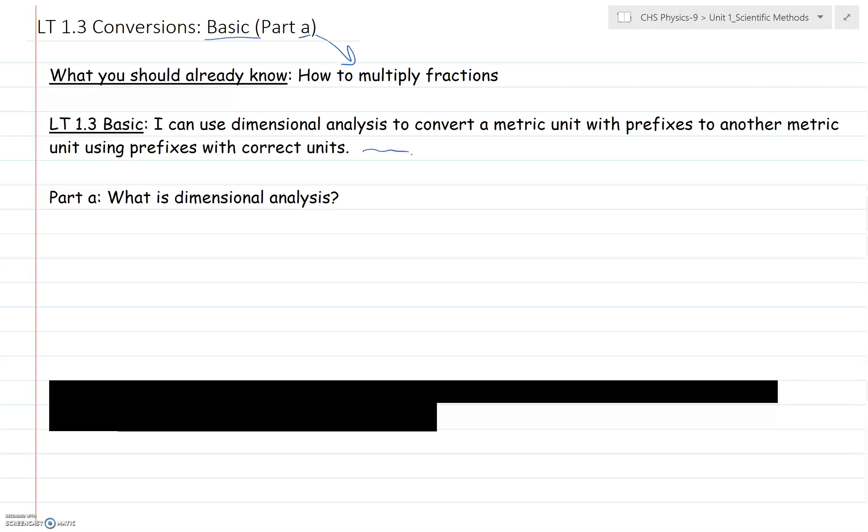For those of you that aren't familiar, there are four different levels to your learning targets in this class. You've got approaching, which you should have studied already. That's talking about your metric prefixes: hecto, kilo, mega, giga, milli, micro, all that good stuff. That's your first level. Then your second level is basic. Everybody needs to be at this basic level. Higher than that we've got meets, and then the highest level is exceeds.